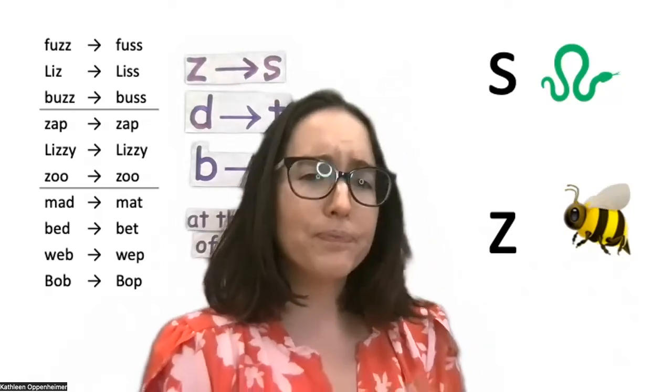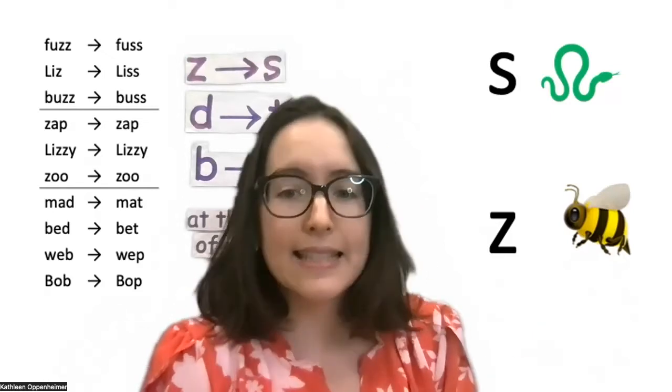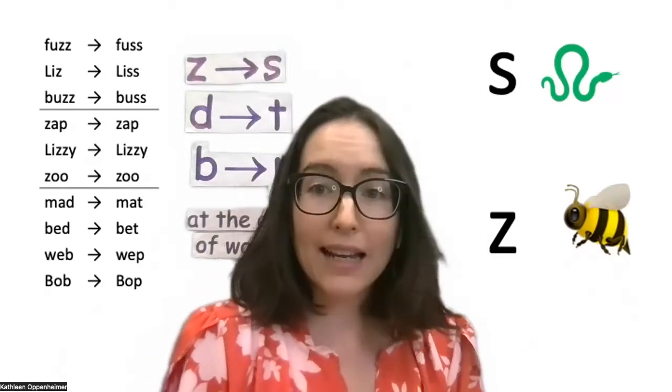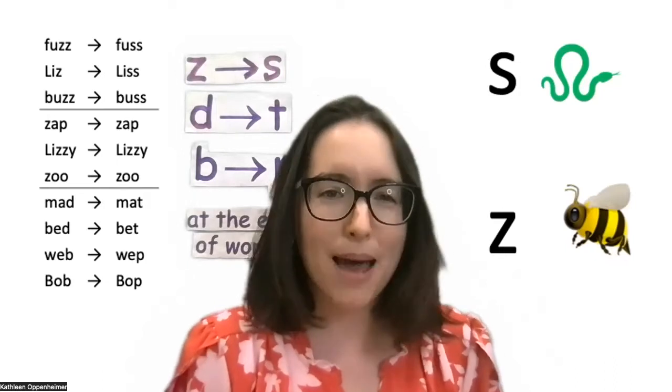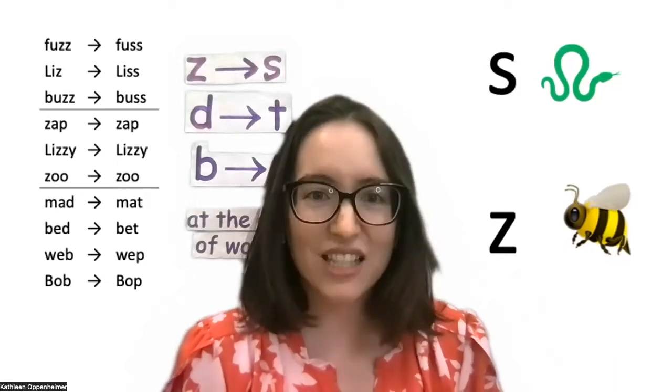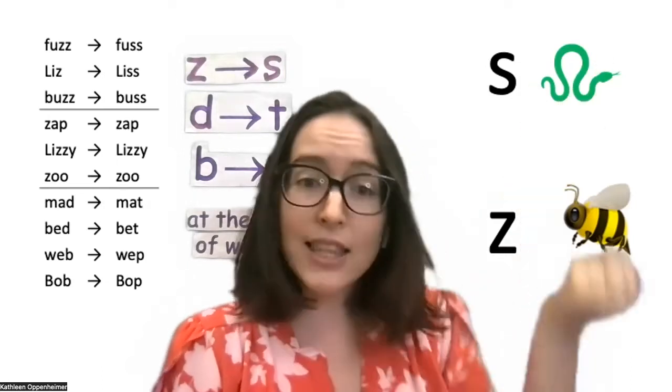So I tell the students: "Say S and Z, go back and forth to figure out how those sounds are similar and how they're different. What's your mouth doing?" So I let them do that for a little bit. They usually come up with something like, "In the Z sound, my tongue feels like it's moving" or "There's some kind of buzzing happening in my mouth." And they're pretty good at noticing that other than that, their mouth is making the same shape for both sounds.